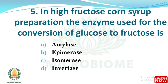Next question: in high fructose corn syrup preparation, the enzyme used for the conversion of glucose to fructose is which of the following? The options are amylase, epimerase, isomerase, and invertase. The right answer is option C: isomerase. Isomerase is used to convert corn syrup to fructose and glucose, yielding 42% fructose and 50% glucose.